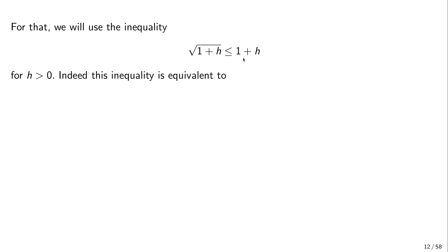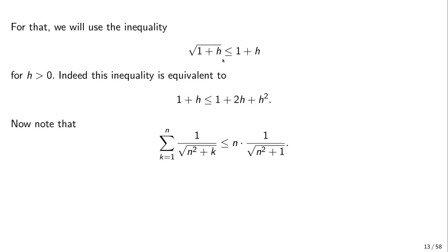Why is the inequality true for every positive h? We can raise everything to the second power. Squaring gives us the corresponding squared expressions, and since h is greater than zero there are no problems. We get 2h for positive h is greater than h, and after expanding there is a positive addition, making the inequality obvious. This squared inequality is equivalent to the original one, so we're going to use it.